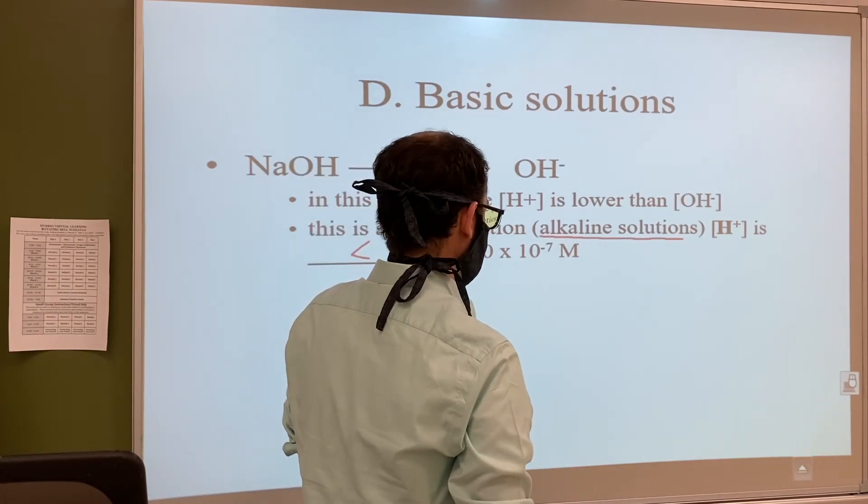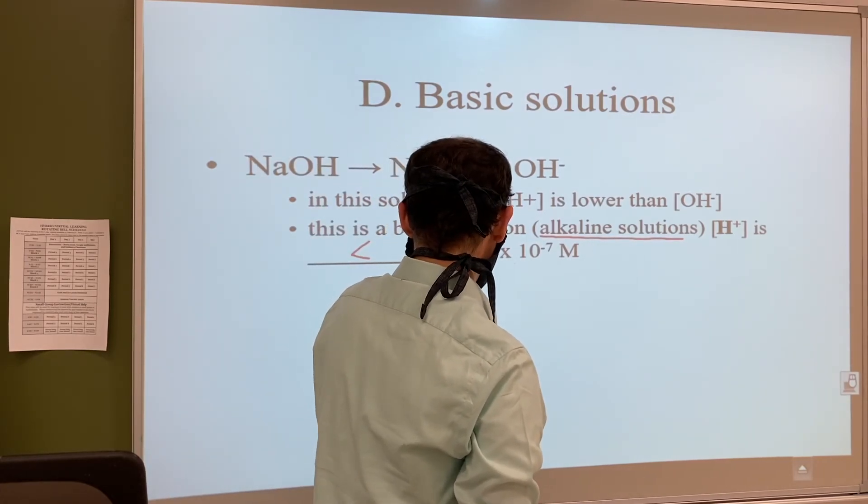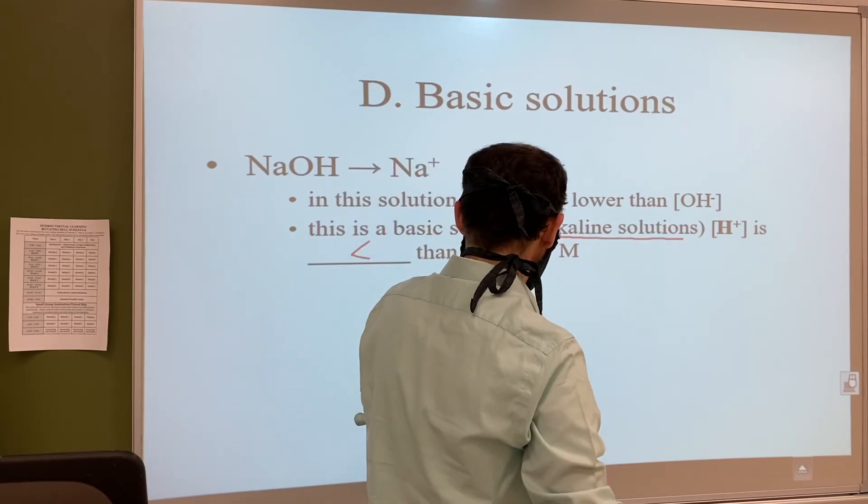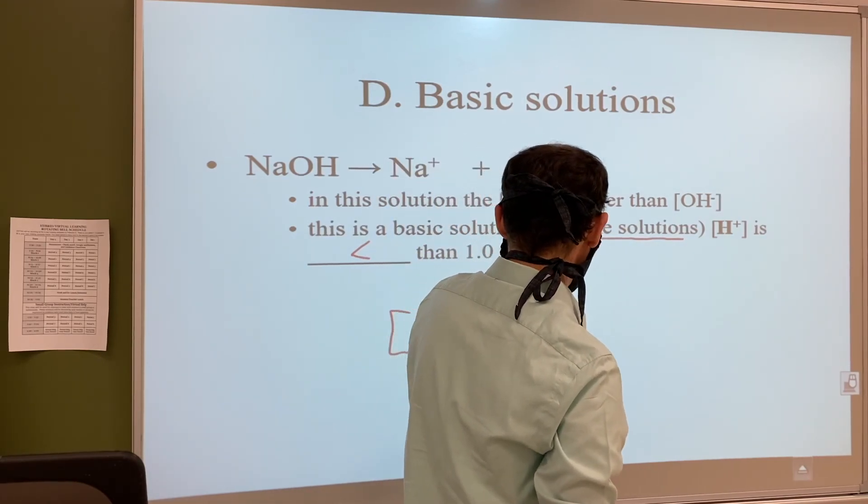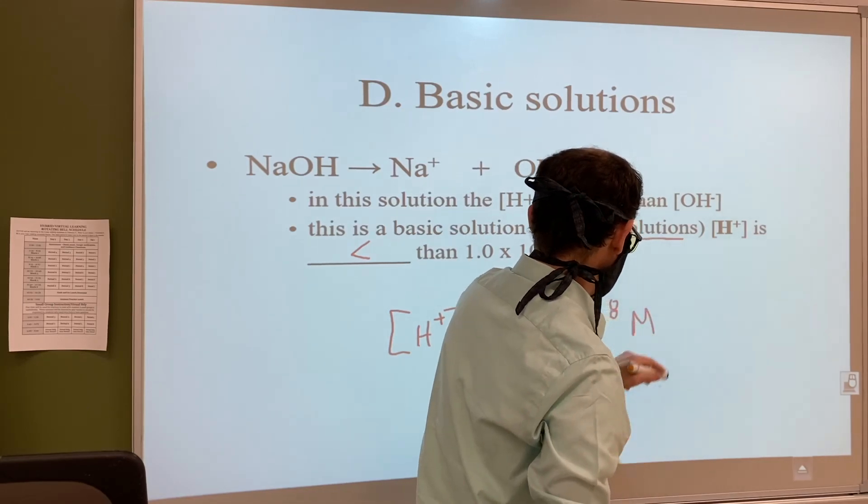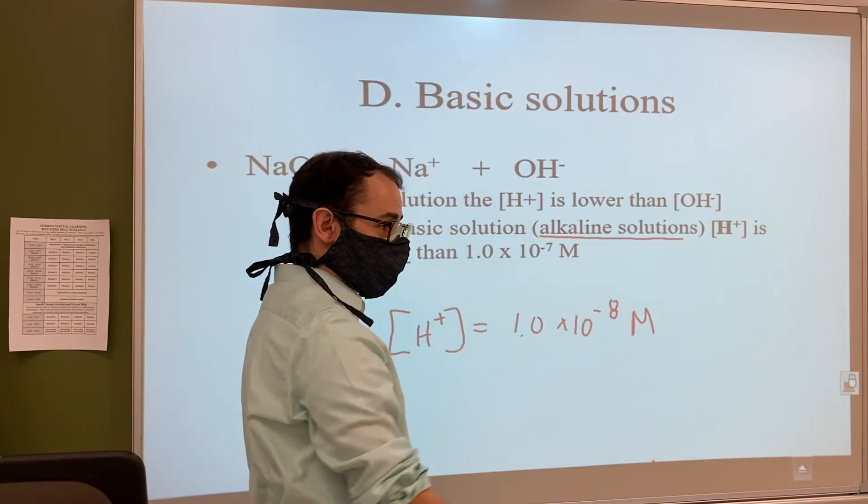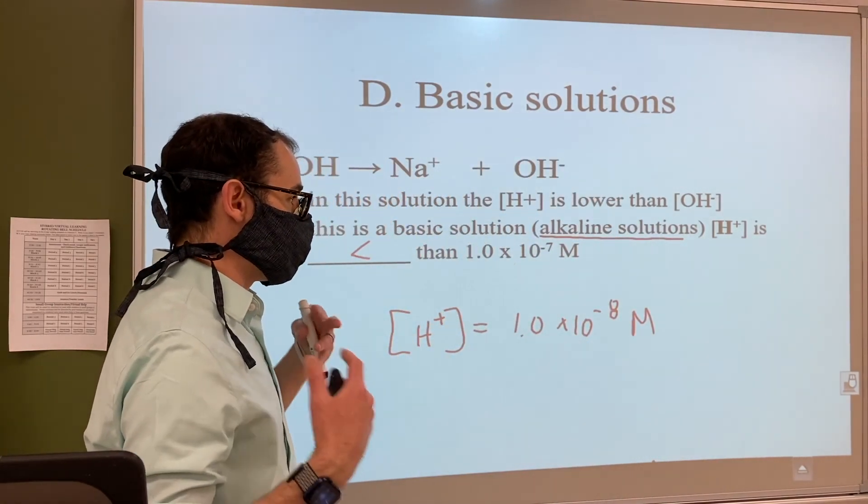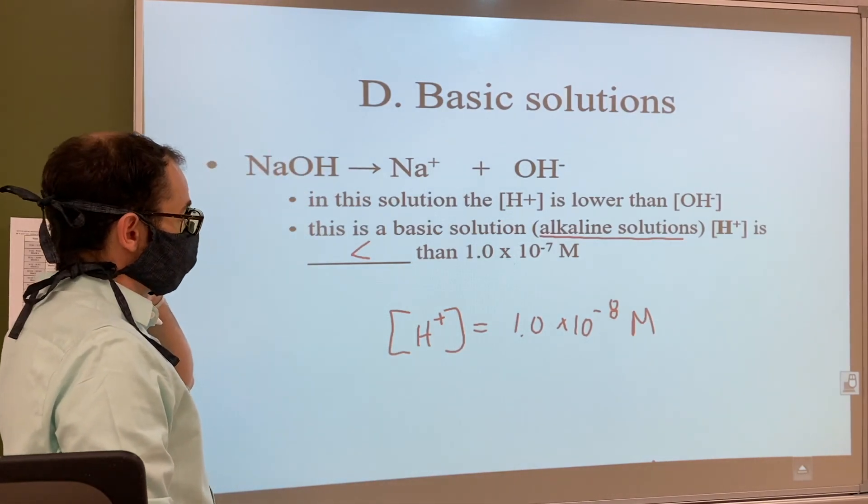If we saw these things, [H+] could be, I don't know, 1.0 × 10^-8. That's a smaller number because it's a larger negative exponent, further away from zero.